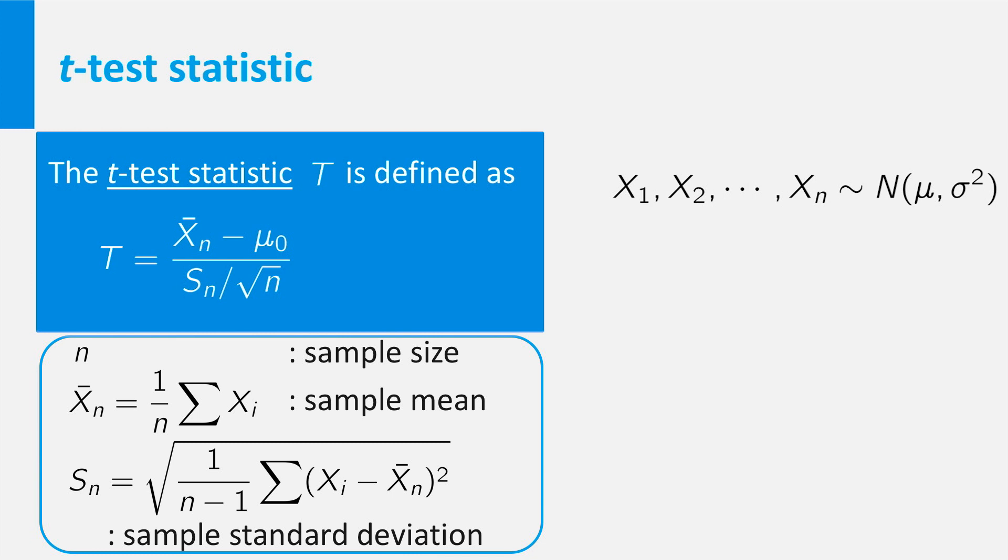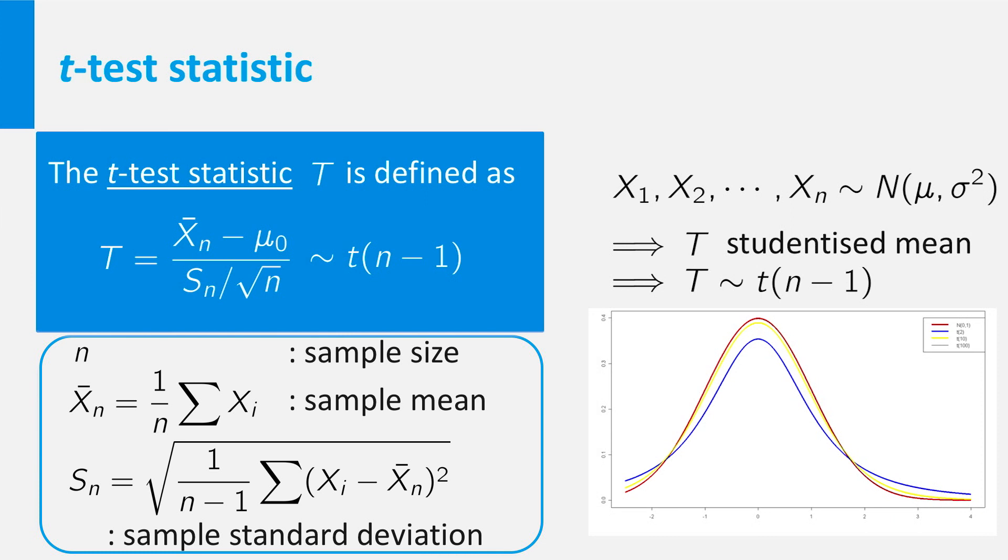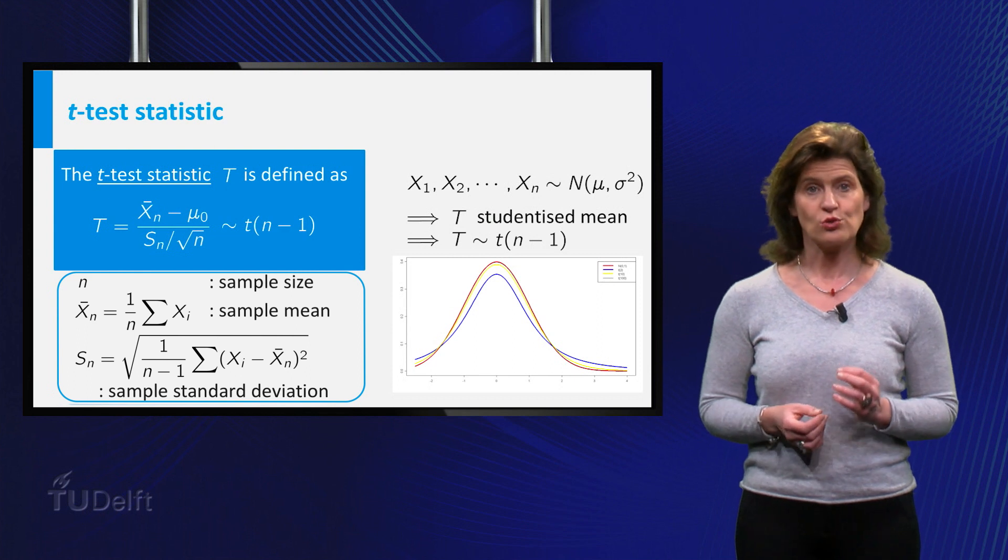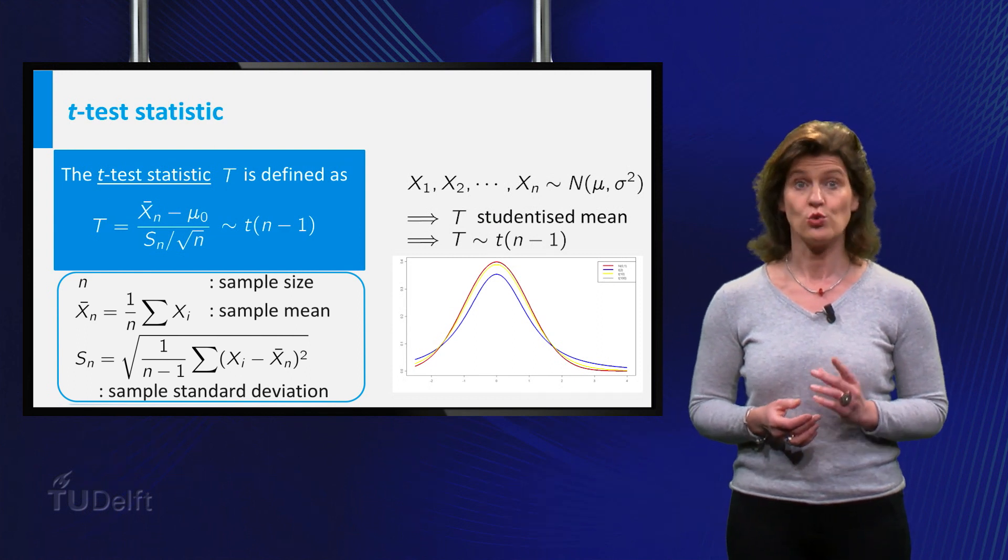Now remember the data were supposed to be representations of normally distributed random variables. This implies that under the null hypothesis t is in fact the studentized mean introduced to you before. So you know it has a t-distribution with n minus 1 degrees of freedom. This fact you need to draw conclusions from the test you are performing.